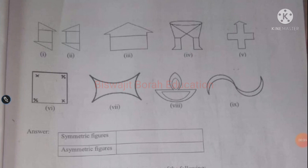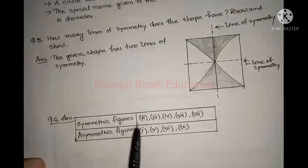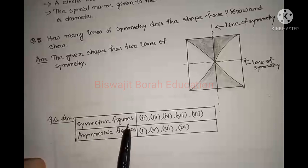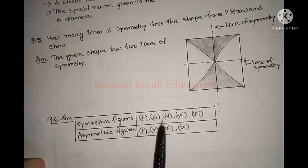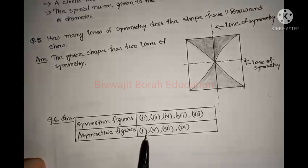From the nine figures: number 1 is asymmetric, number 2 is symmetric, number 3 is also symmetric, number 4 is also symmetric, number 5 is asymmetric, number 6 is asymmetric, number 7 is symmetric, number 8 is symmetric, and number 9 is asymmetric. So fill up the table: symmetric figures are numbers 2, 3, 4, 7, and 8; asymmetric figures are numbers 1, 5, 6, and 9.